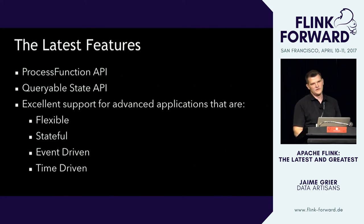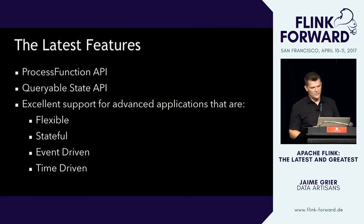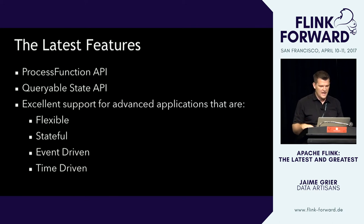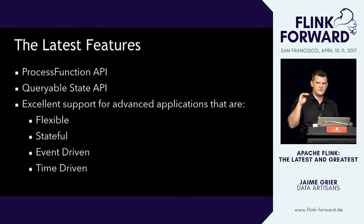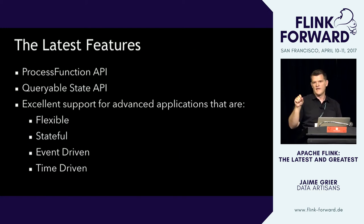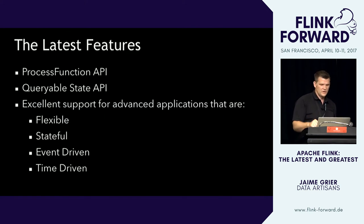We're also going to talk about queryable state, which in Flink 1.2 is available and useful but still experimental. It allows you to query Flink from the outside world — look up state that's inside Flink — but in the current version it's not highly available. It's only available when your job is running, so even during machine failures and recovery, you can't service queries either. That will change in the future.